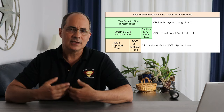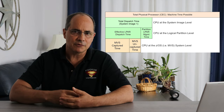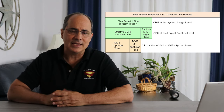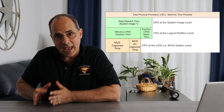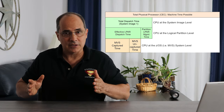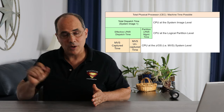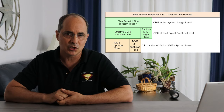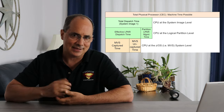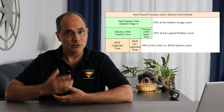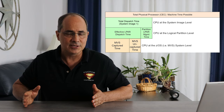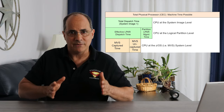Uncaptured time is a topic covered in more detail in another video on this channel, but for now it's important to know we can't directly account for it. One key health indicator is the ratio of uncaptured time to captured time. Too much uncaptured time can be a sign of poor system health, making it critical to understand and diagnose this measurement.